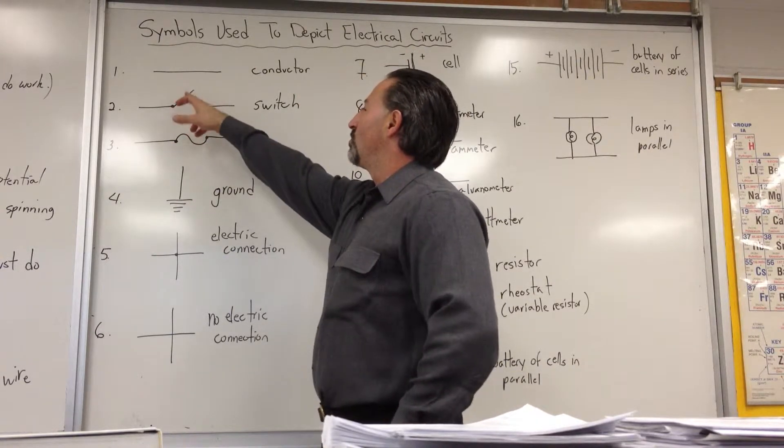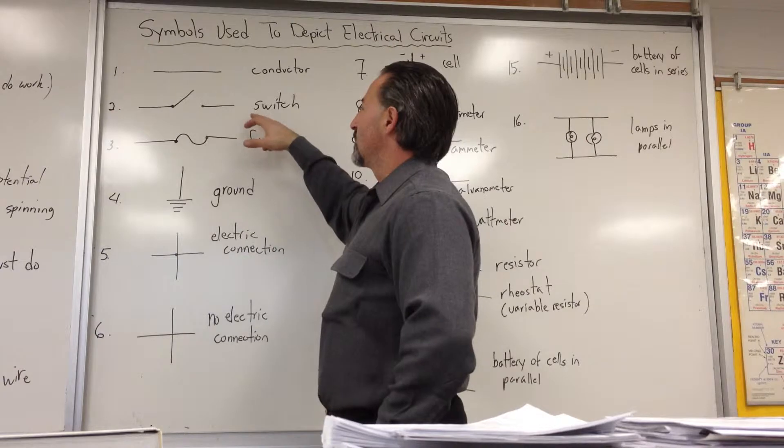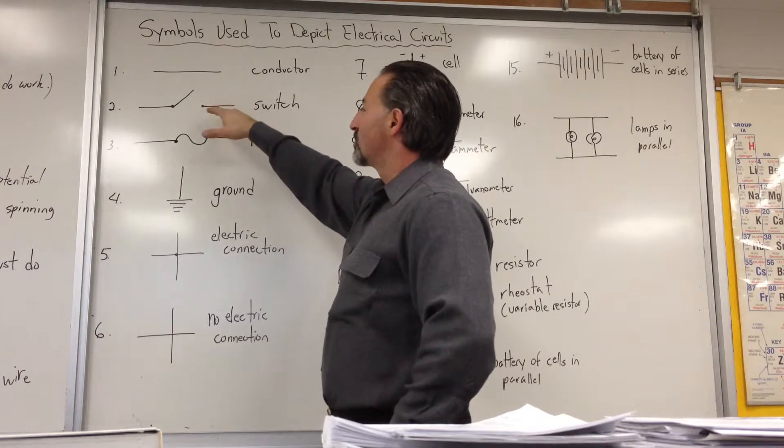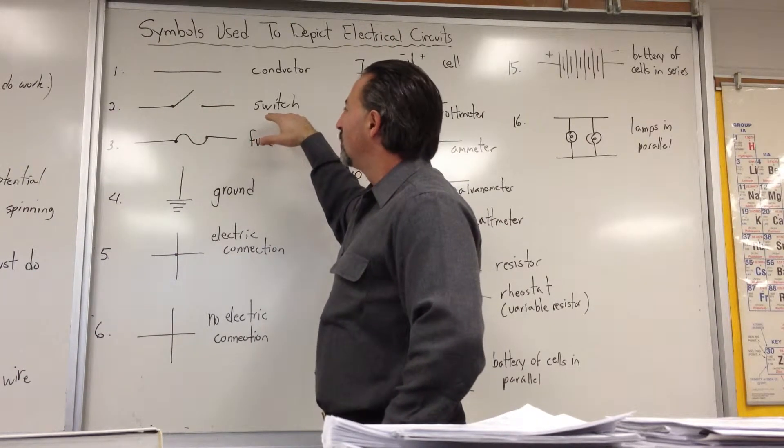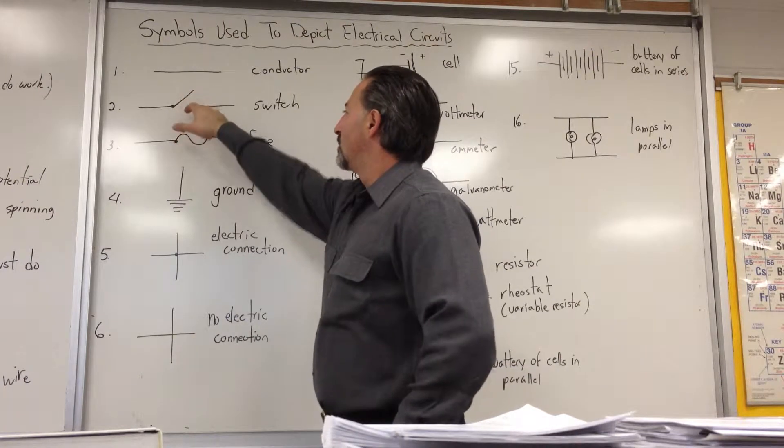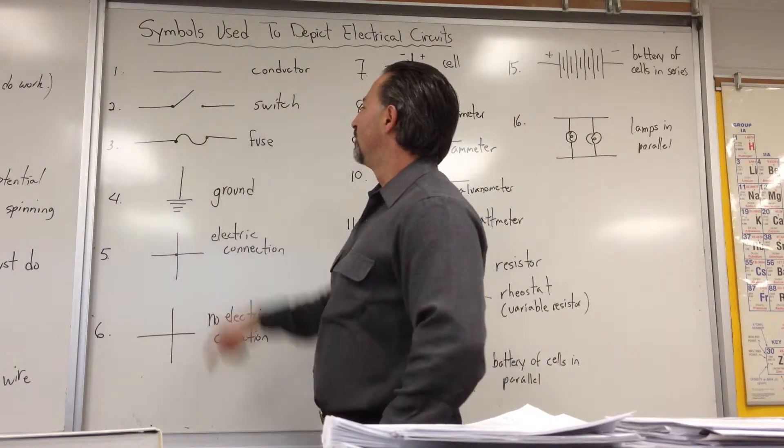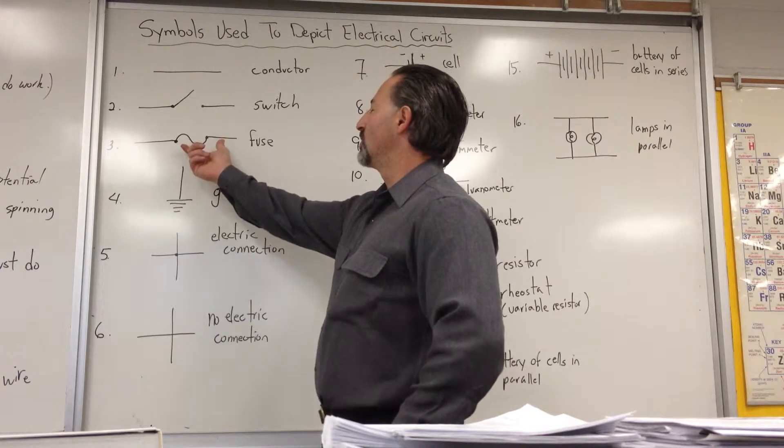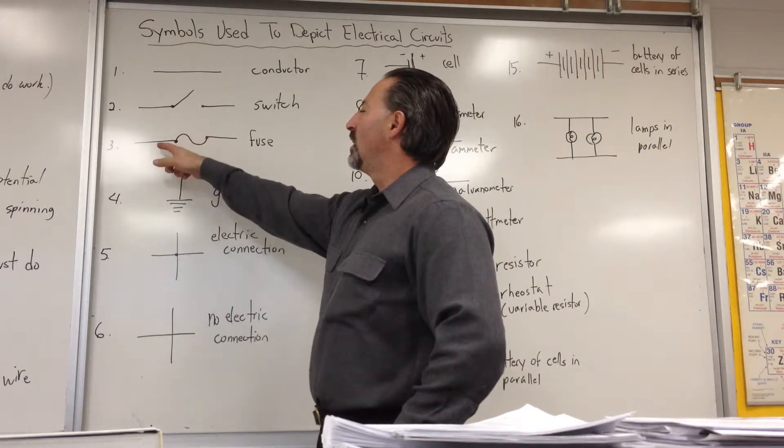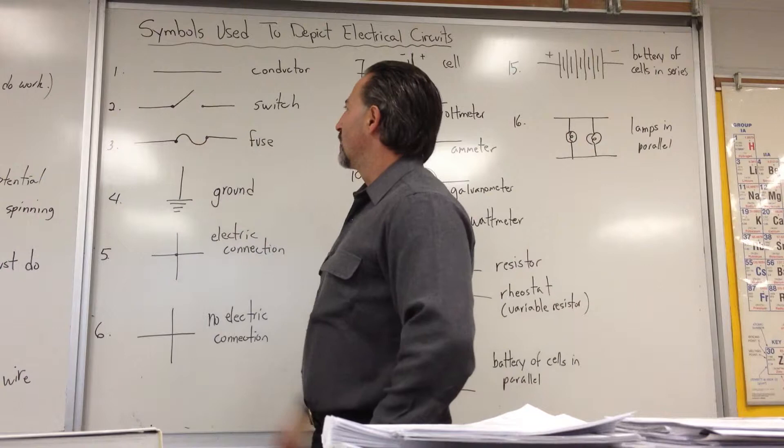If you have two dots like that with an open line, that would be a switch that's open. A closed switch, which would allow the current to flow, would be drawn with that line down touching that dot. This is a fuse, which would burn out if the voltage or the amperage is too high on the conductor.